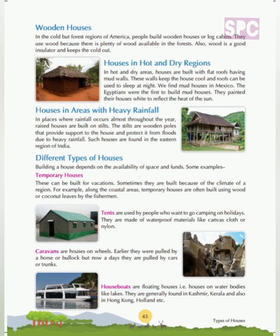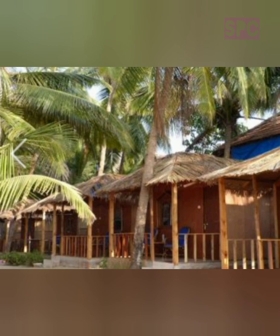Building a house also depends on the availability of space and funds. First, temporary houses. These can be built for vacations, and sometimes they are built because of the climatic condition of a region. For example, along the coastal areas, temporary houses are often built using wood or coconut leaves by the fishermen. Local fishermen make temporary houses for tourists using wood and coconut leaves, which are available in abundance, making construction cost-effective.